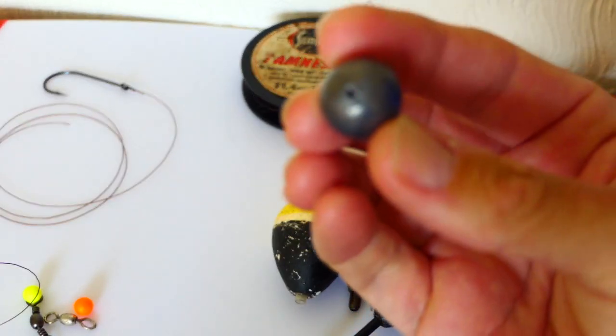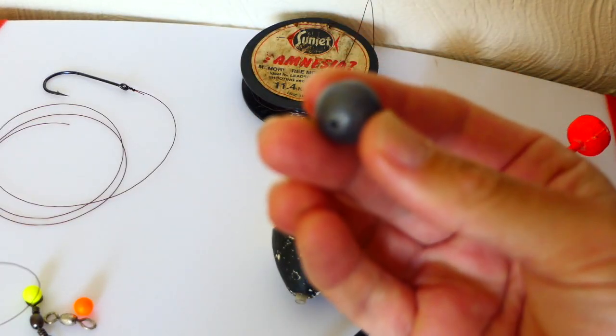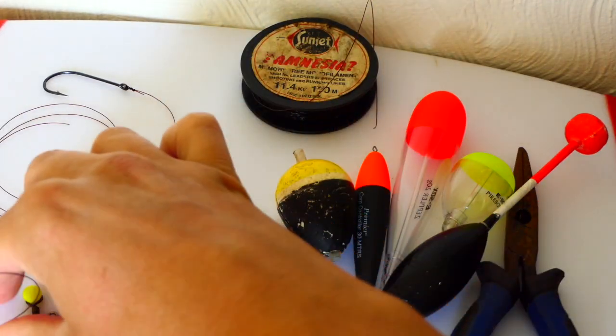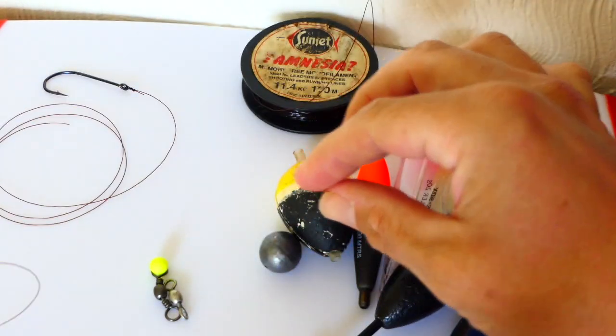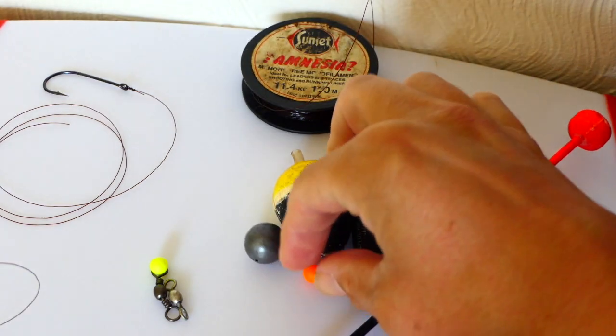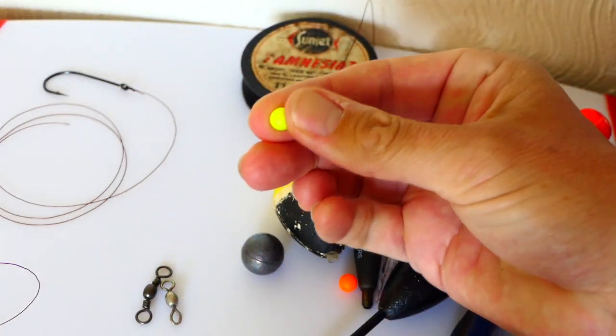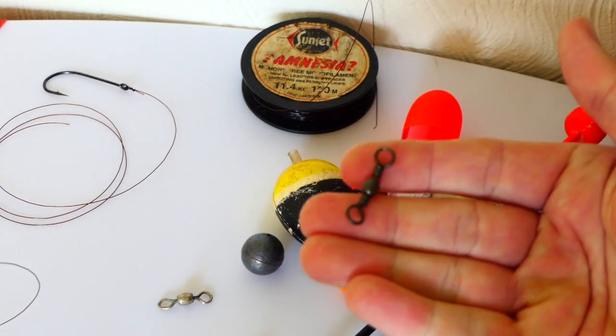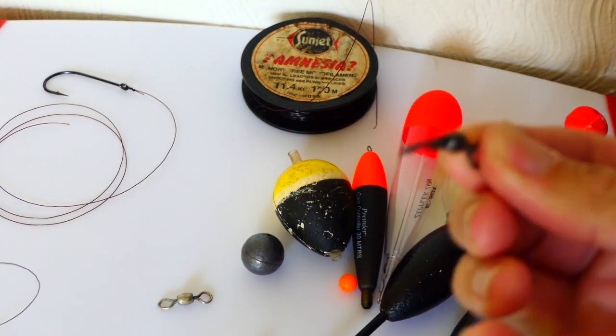So that's an ounce and a half lead bullet. We'll use that to get the bait down at the bottom. Let's say we're fishing 20 foot deep. Your little beads, you're going to need them, just a bit of protection on the knots and also one on top of the float for the stop knot.